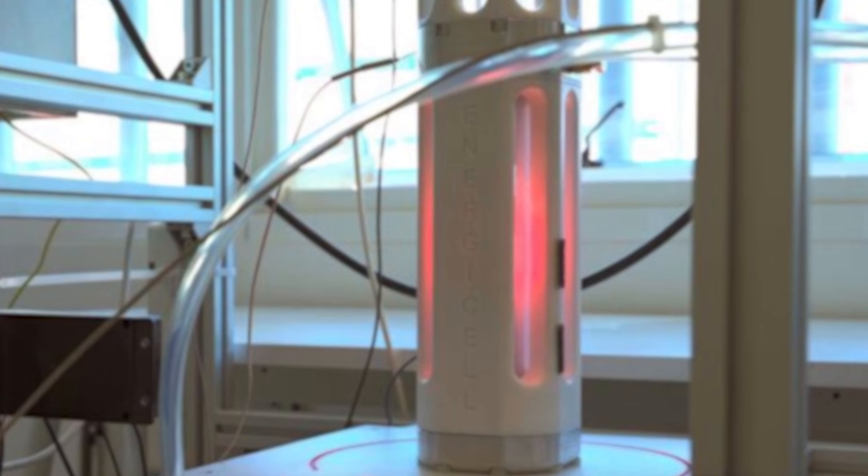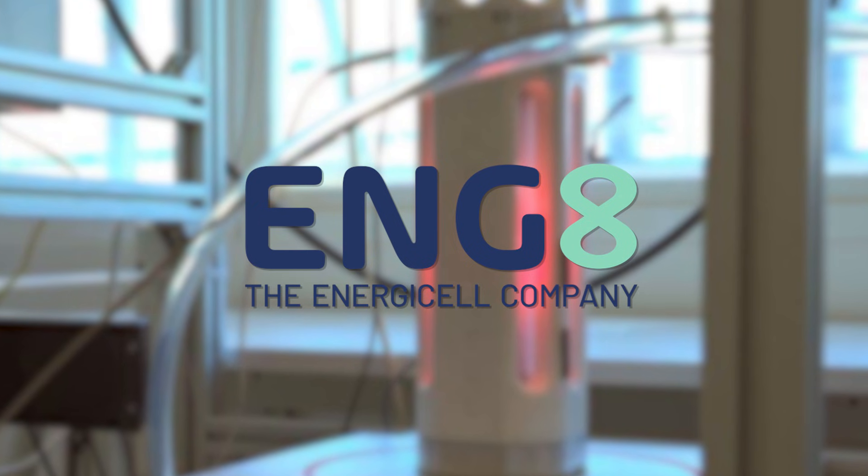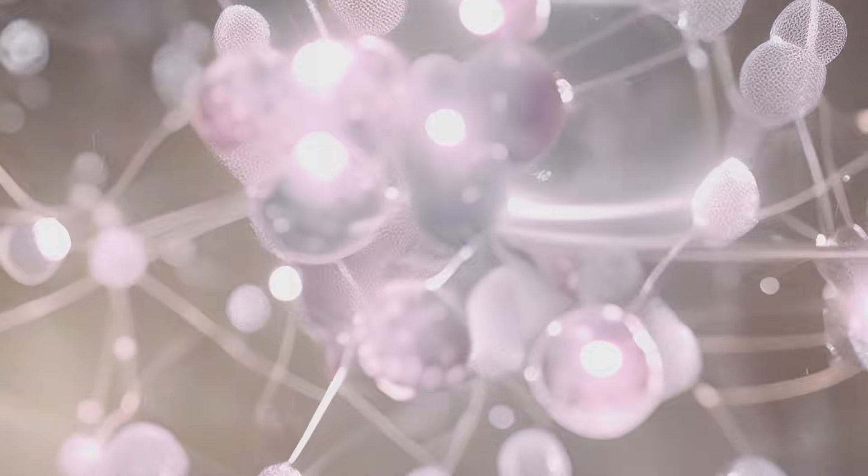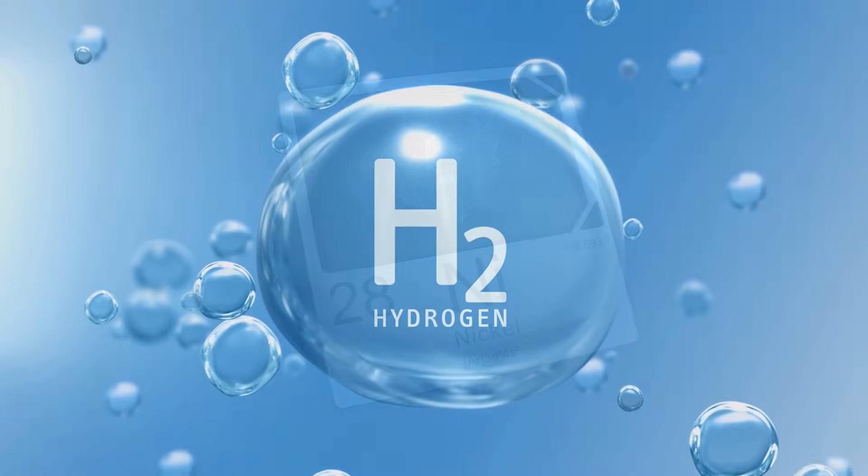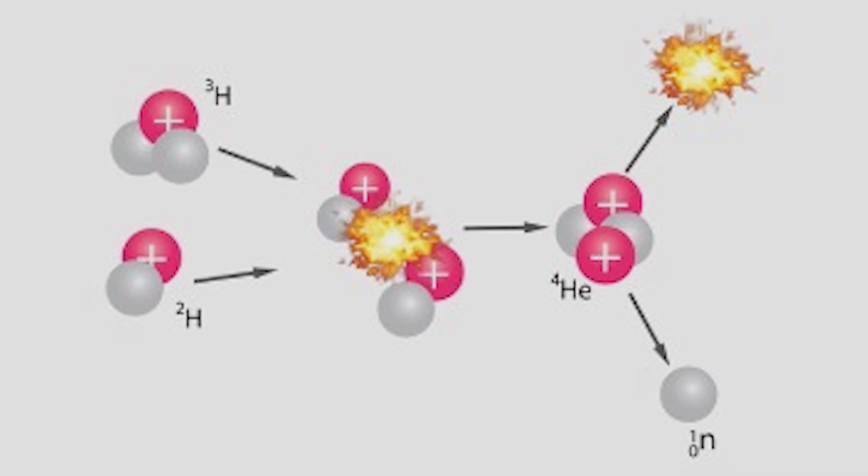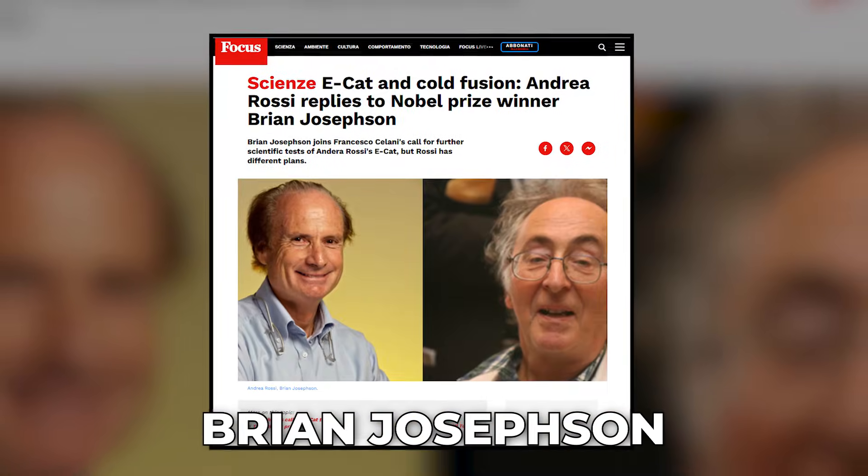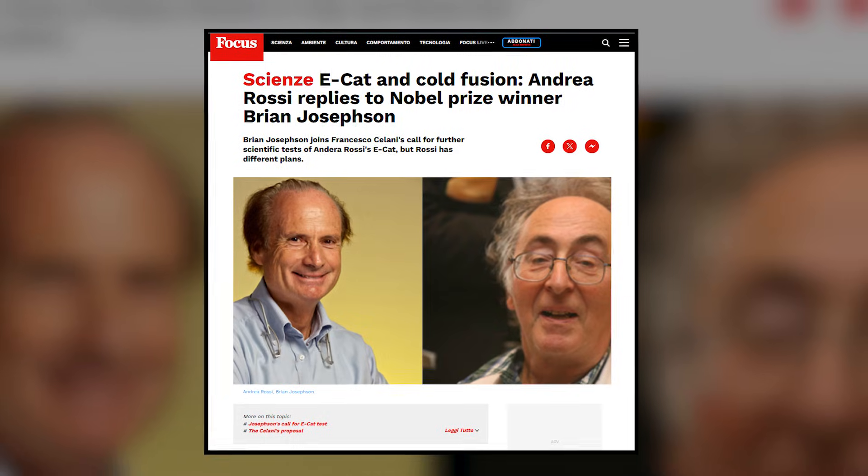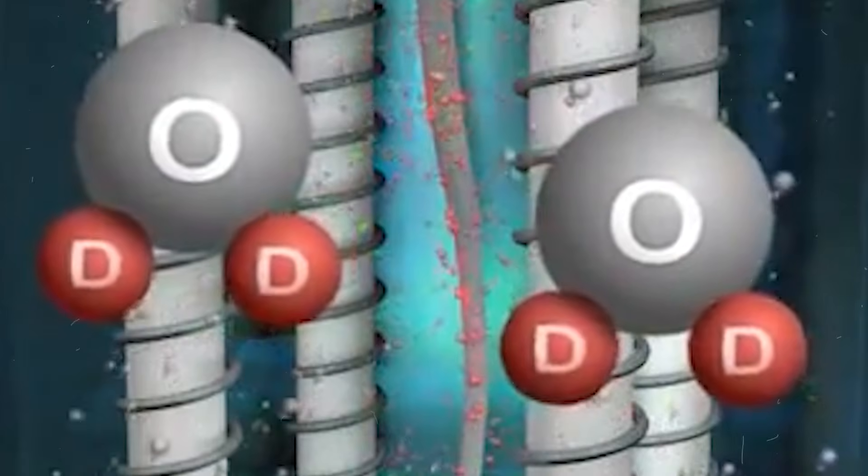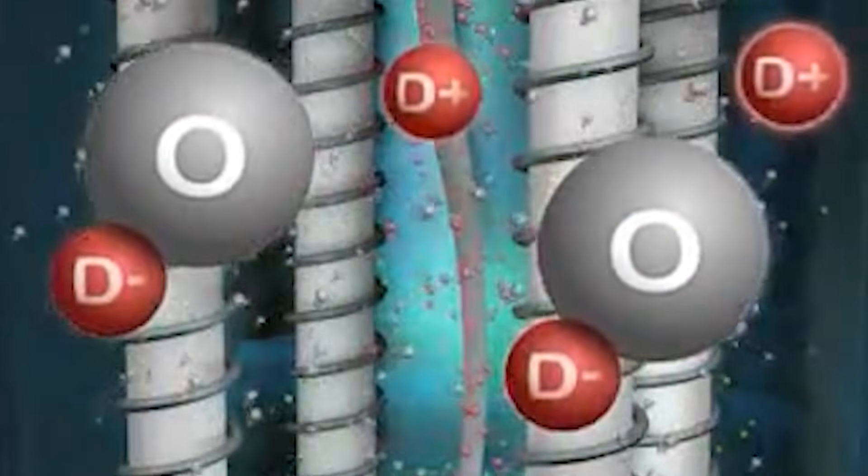Meanwhile, companies such as ENG8 in the UK, Orano in Canada, and Prometheus in Italy claim prototype approaches, often nickel-hydrogen-based, though public peer-reviewed data remains limited. Nobel laureate Brian Josephson and other supporters have urged continued investigation, not as proof, but as a reminder that anomalies should be tested, not mocked.